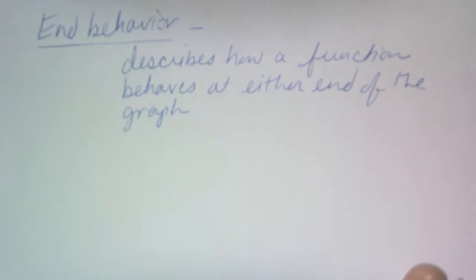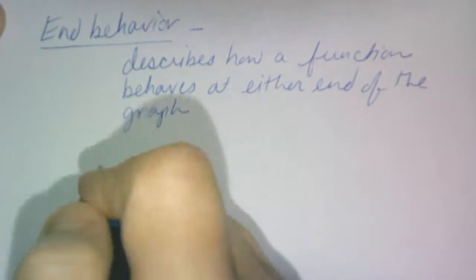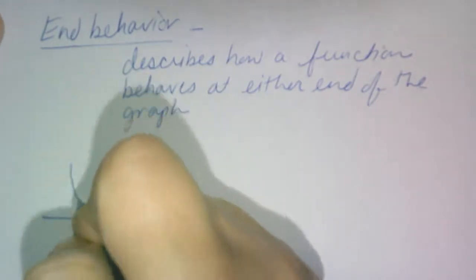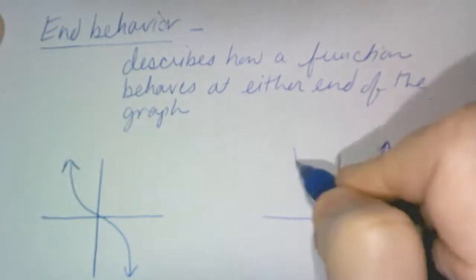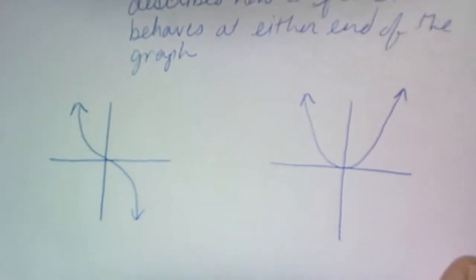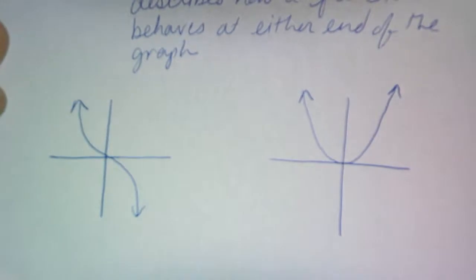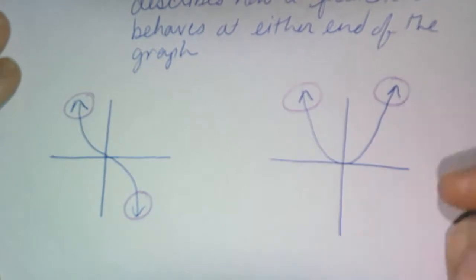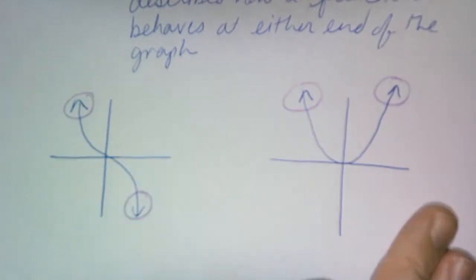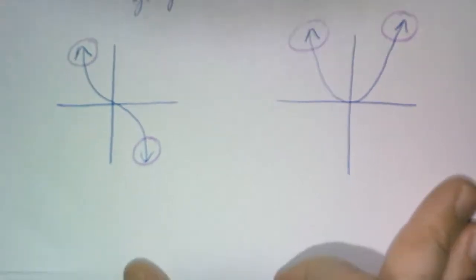I really think they teach you end behavior because what eventually is going to happen is we're going to learn how to graph a function without the calculator. And you'll start to see that all of the polynomial functions start to have the same end behavior, most of them. So let me actually draw two graphs for you right here. We'll do this one. And then we'll just do good old Mr. Parabola.